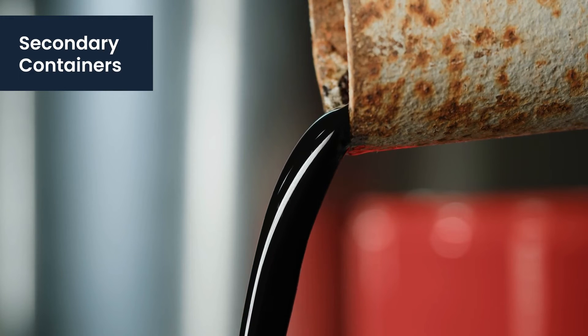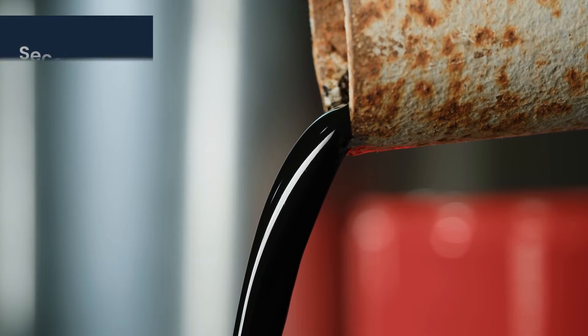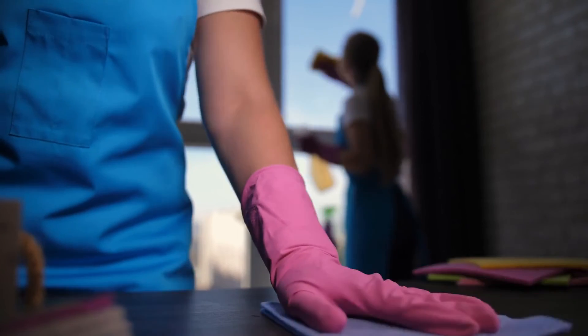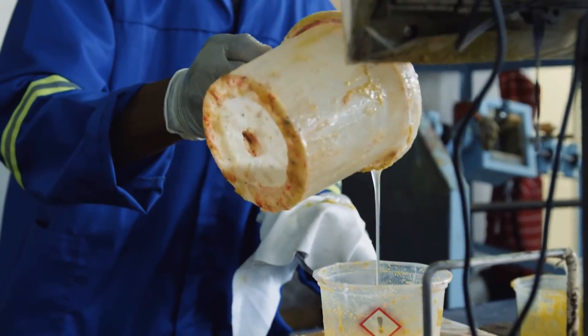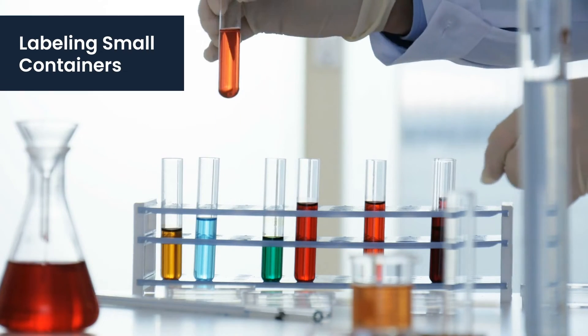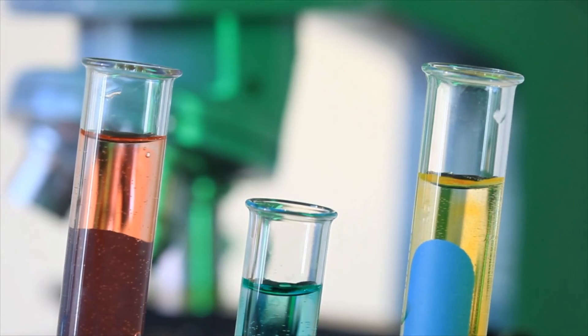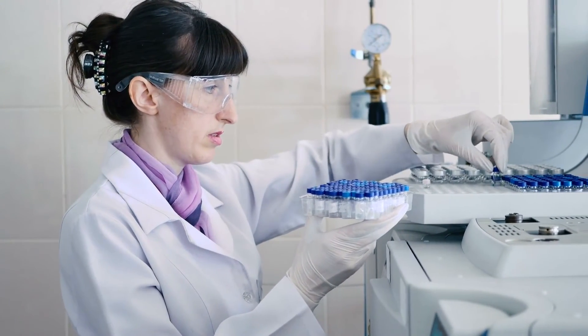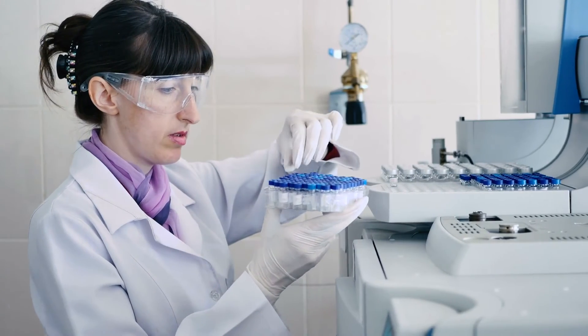There are times when chemicals may need to be transferred into secondary containers — for instance, when a worker pours cleaning chemicals into a spray bottle, or a technician transfers a substance into a portable container for a specific task. In these cases, the secondary storage container must also carry a GHS label that communicates the same hazard information as the original. Small containers like lab vials can be a challenge to label. In these cases, you can use creative solutions like pull-out labels, fold-back labels, or tags.